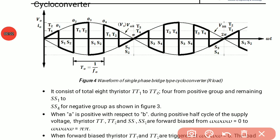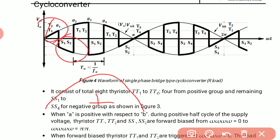Now we will discuss the waveform of the bridge type step-up cycloconverter. As we can see in this waveform, during the positive half cycle of AC input, thyristors T1, T2 and S1, S2 work, while during the negative half cycle, thyristors T3, T4 and S3, S4 will work.